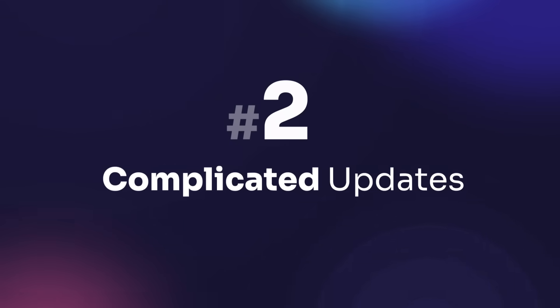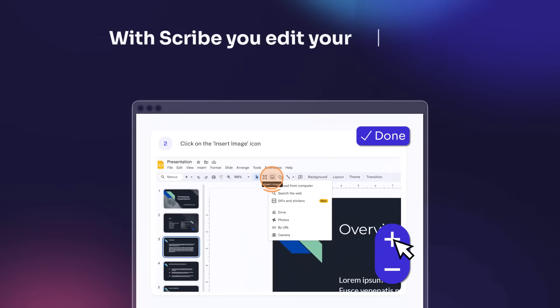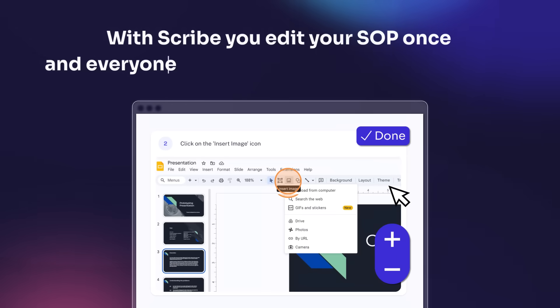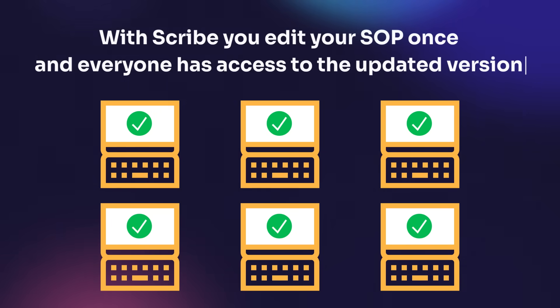Mistake two: complicated updates. Outdated SOPs are of no use to anyone. But if the thought of keeping them up to date keeps you up at night, we've got ourselves a problem. With Scribe, you edit your SOP once and everyone has access to the updated version. Wave goodbye to having to update it and resend to everyone.